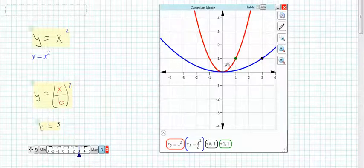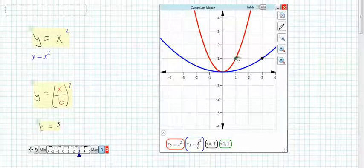So, y equals x squared includes the point 1, 1. What happened to this point 1, 1? b is the horizontal, because it's x, b is the horizontal scale change.